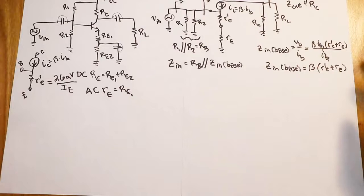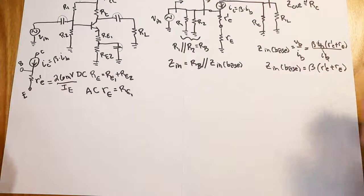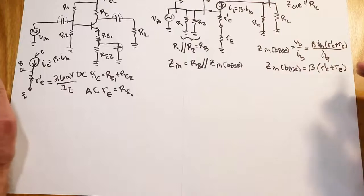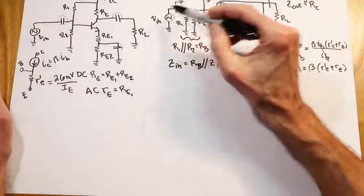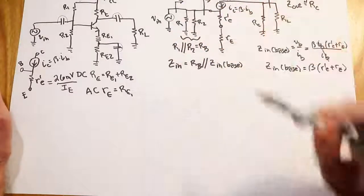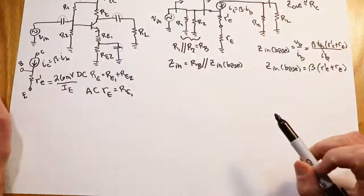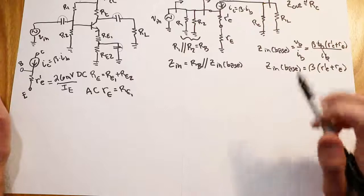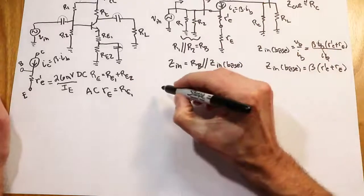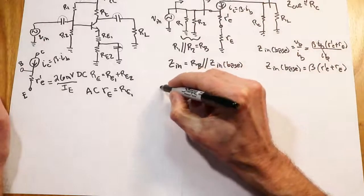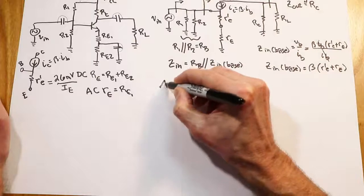High input impedances for general purpose amplifiers like audio amplifiers is generally a good thing, because that means you're not drawing a lot of current from the driving source. That's two down, one to go — the voltage gain, the amplification factor AV.